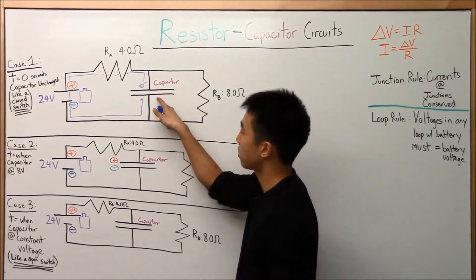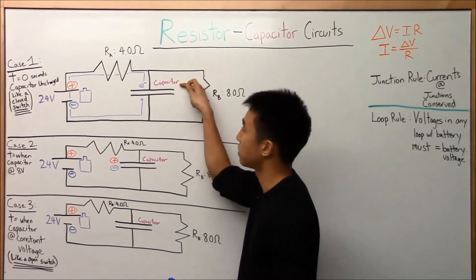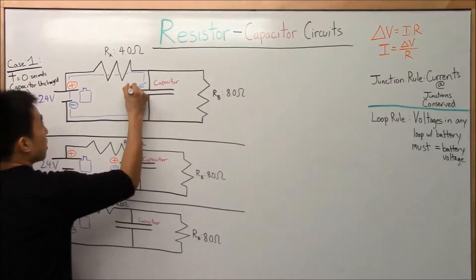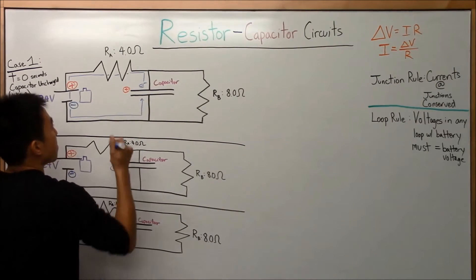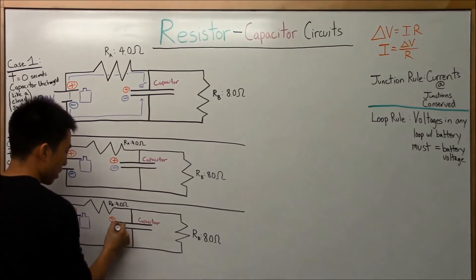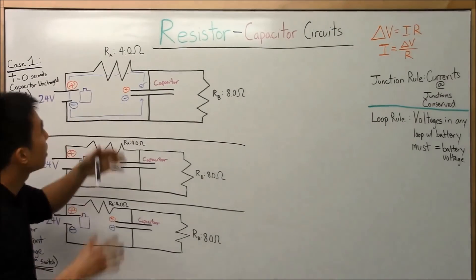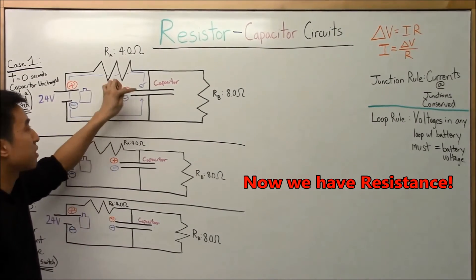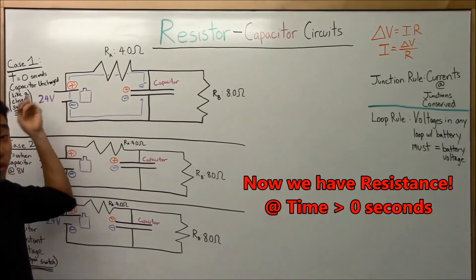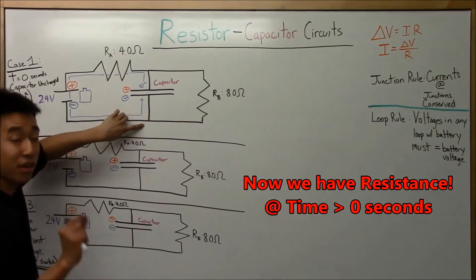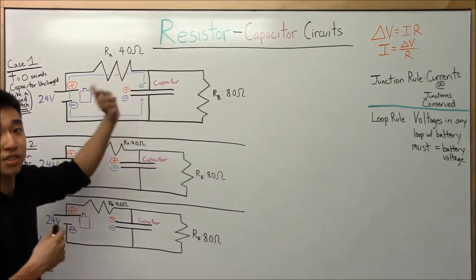The moment some electrons hop onto the capacitor plate, there's going to be a potential difference — this plate becomes positive, this one negative. The moment there's a voltage, there's going to be some resistance in that capacitor. At around t equal to 0.5 or 0.1 seconds, a very small percentage of electrons start going down the resistor path.